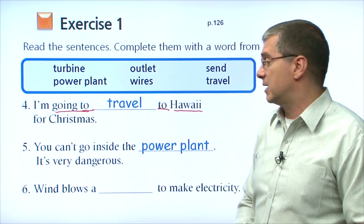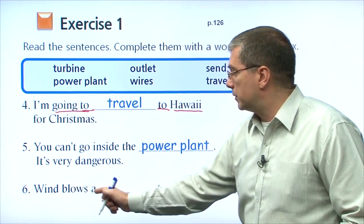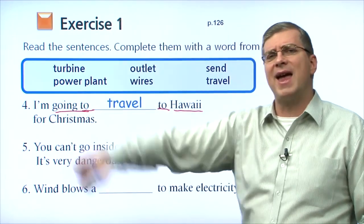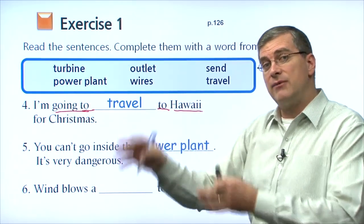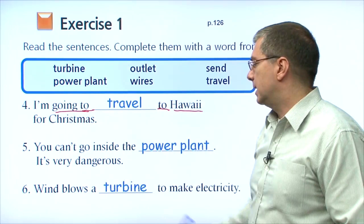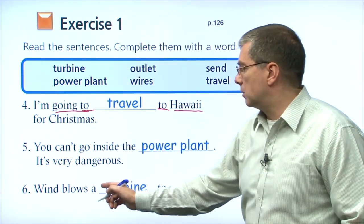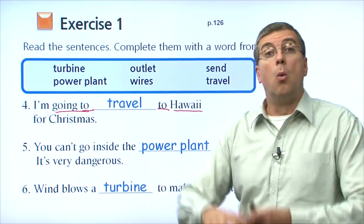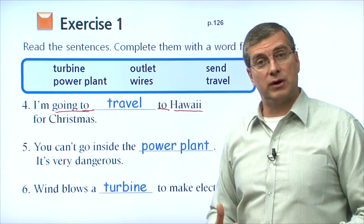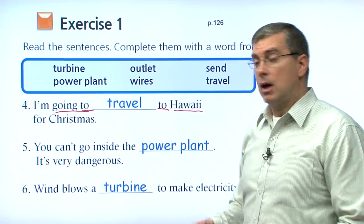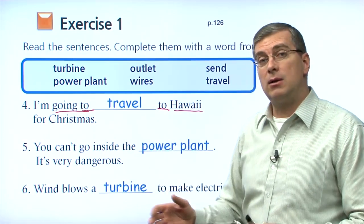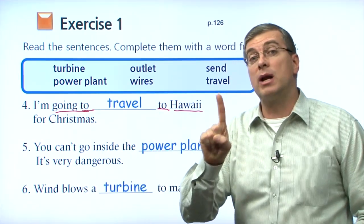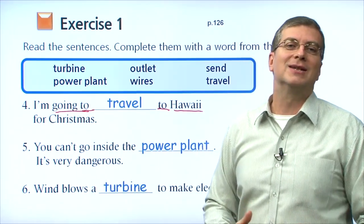Let's move on to the last exercise, number six: wind blows a blank to make electricity. Wind blows a what? Remember the big fan we saw the pictures of outside? There were many of them together. What was that? That's right — it was a turbine. So wind blows a turbine to make electricity. This is one of the many ways that we get electricity — from wind power, from solar power, and other ways.